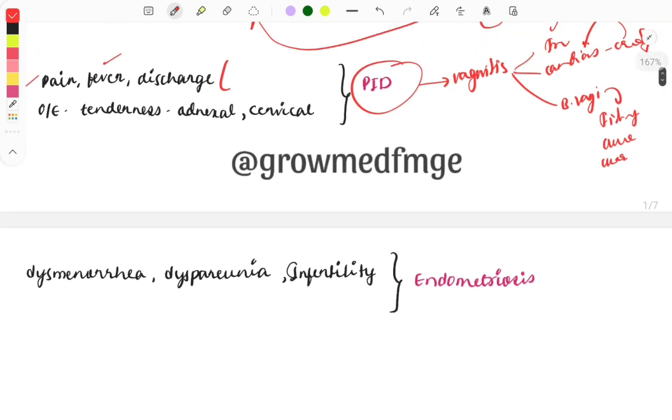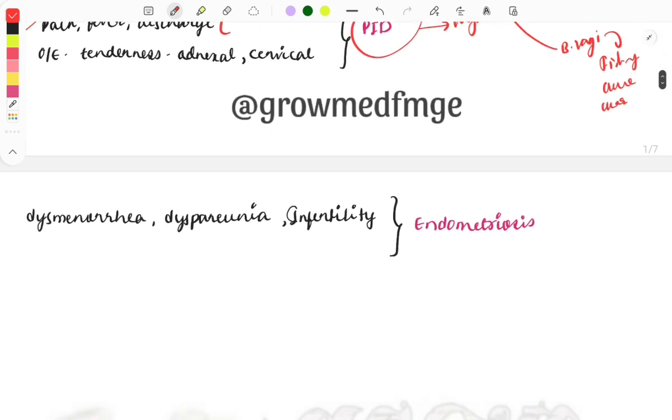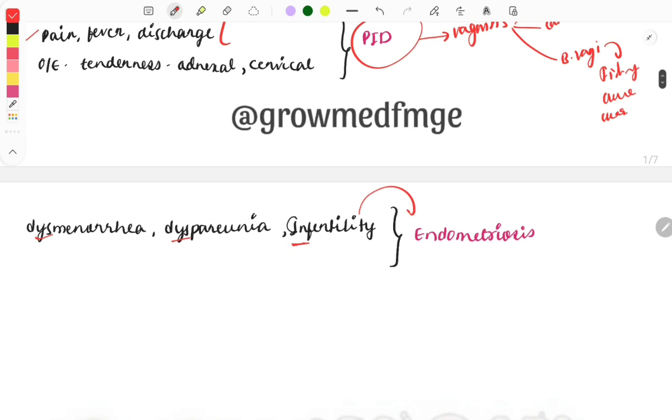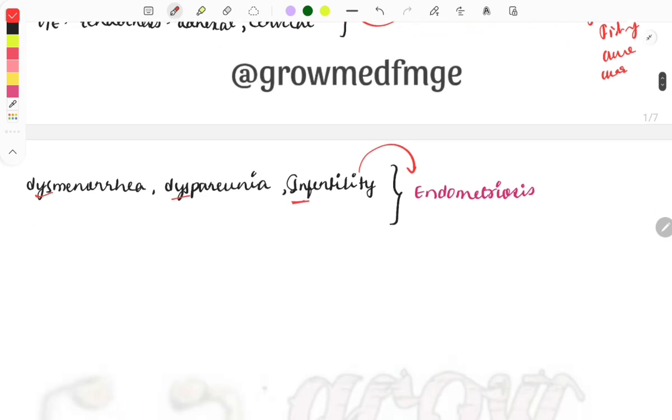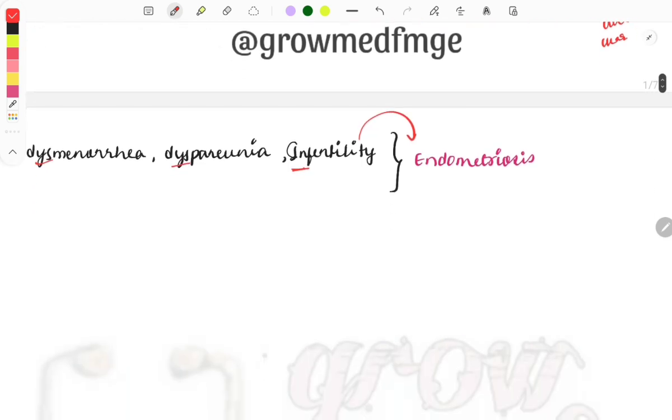Moving on to another very important case: if in the question dysmenorrhea, dyspareunia, and infertility is given, and in the options endometriosis is there, go with endometriosis. This is the condition which will be causing pain and the patient will be coming. The second most important feature why the patient will be coming to us is infertility.